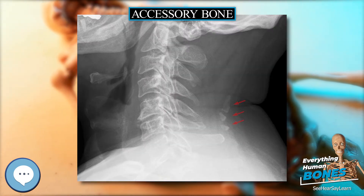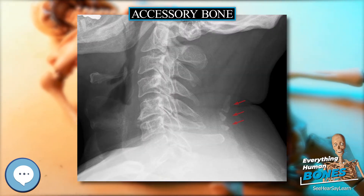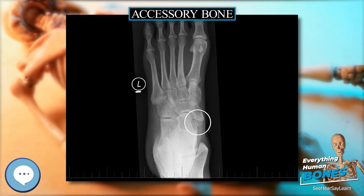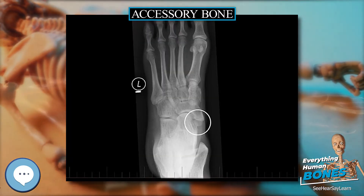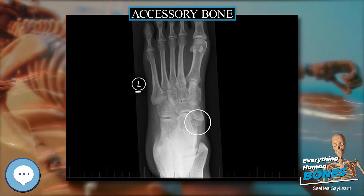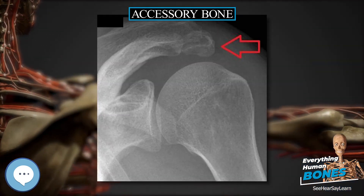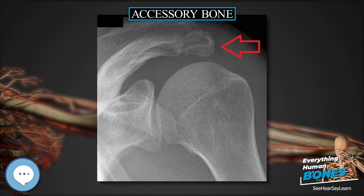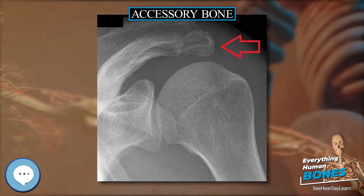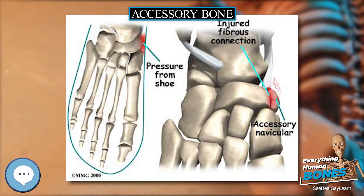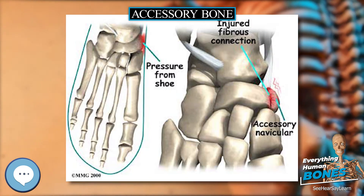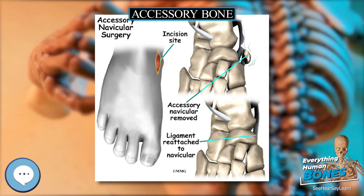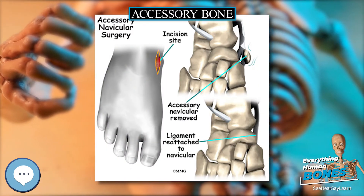In most primates, including orangutans and gibbons, the os centrale is an independent bone attached to the scaphoid by strong ligaments. Conversely, in African apes and humans, the os centrale normally fuses to the scaphoid early in development. In chimpanzees, the bone fuses with the scaphoid first after birth, while in gibbons and orangutans this occurs first at older age.